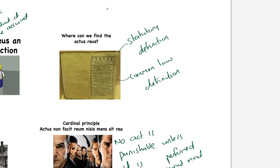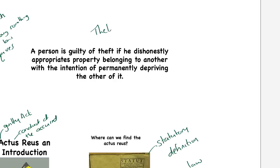Let's take a quick look at an example. This is an example of theft. This is the definition of theft as laid out in statute, a statutory definition from the Theft Act, Section 1. It says that a person is guilty of theft if he dishonestly appropriates property belonging to another with the intention of permanently depriving the other of it.